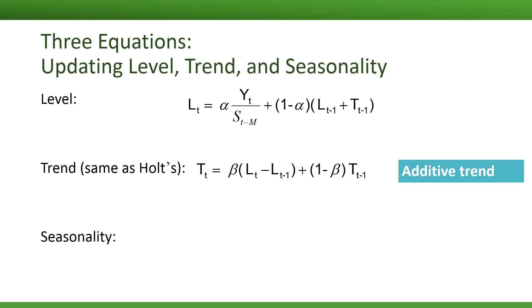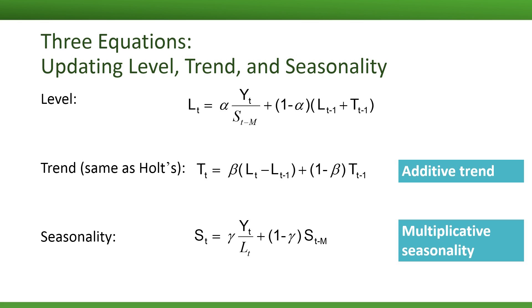The trend updating equation is identical to what we saw in Holt's exponential smoothing — we update the previous trend by considering the latest difference between levels. In the seasonality updating equation, y_t is divided by the level component, L sub t. This gives the de-trended value of y_t. So the seasonality is updated by combining the most recent seasonal component, S sub t minus m, with a de-trended value of y_t.